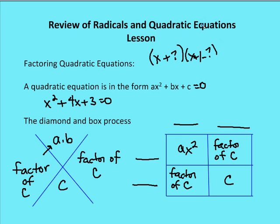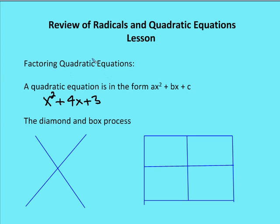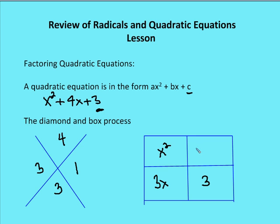We use the box process to factor the quadratic expression. In the diamond, a times b is 4 at the top and c is 3 at the bottom. We're looking for factors of 3 that add to 4 — those factors are 3 and 1. In the upper left corner of the box we place x squared, in the bottom right corner we place c (which is 3), and in the remaining corners we place 3x and x.